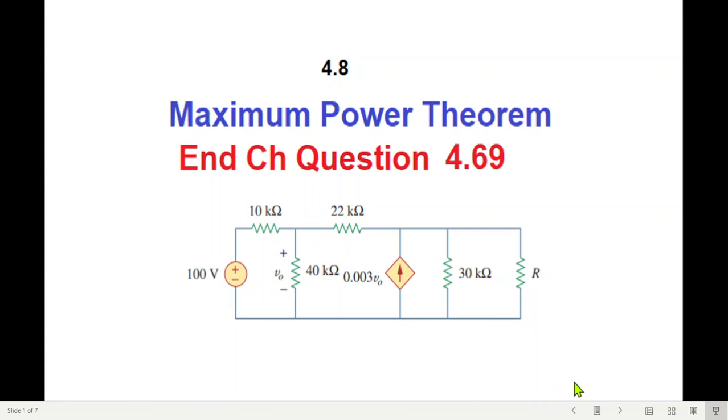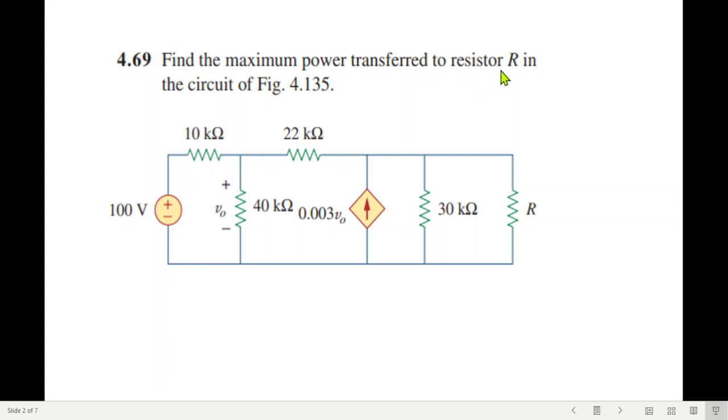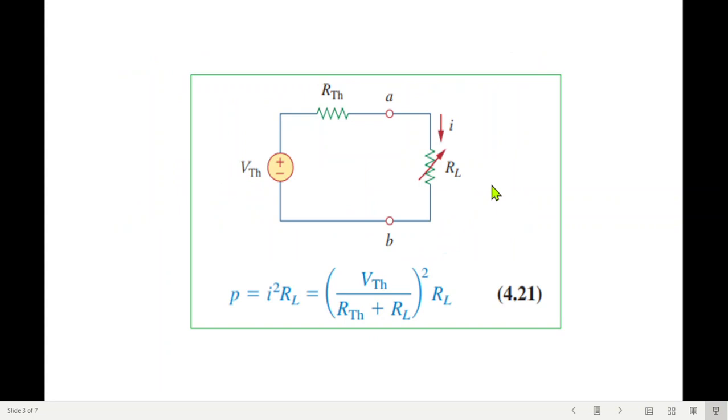This video is about power theorem and here we'll be solving end chapter question 4.69, on the request of a student. So let's see the question: find the maximum power transferred to the resistor R in the circuit. So we need to determine the maximum power that can be transferred to this resistor R.